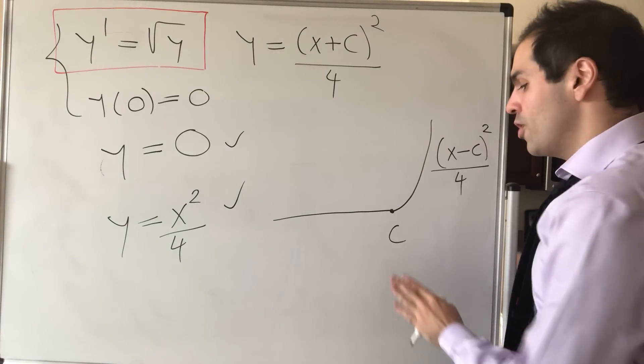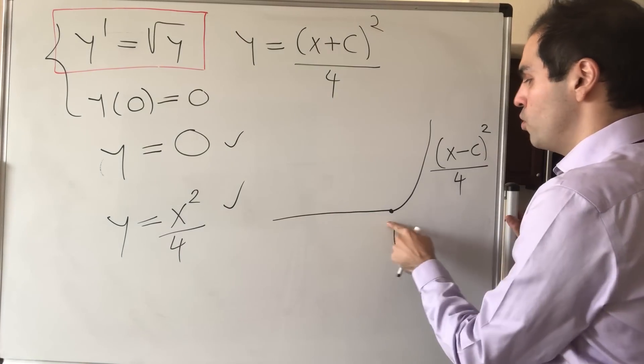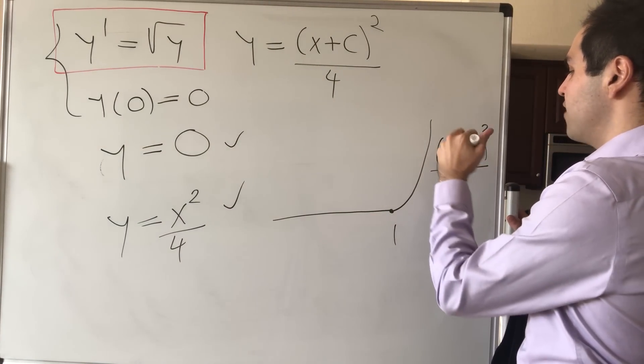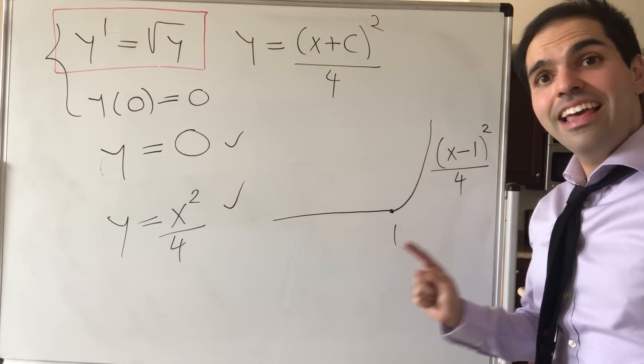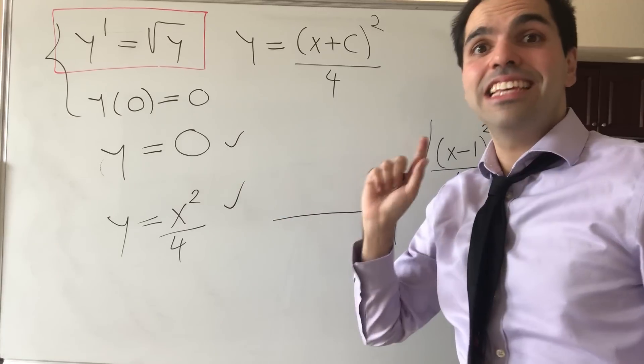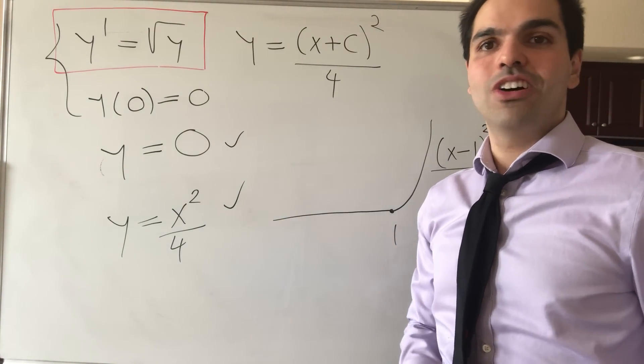So in particular, if you want a concrete example, the function, which is 1, 0 up to 1, and then just becomes x minus 1 squared over 4. So again, in particular, this equation has infinitely many solutions, even with an initial condition.